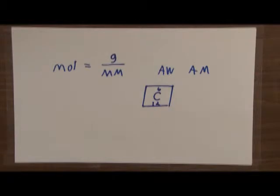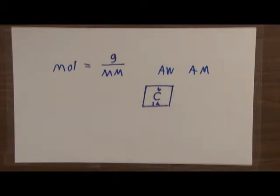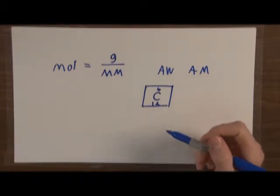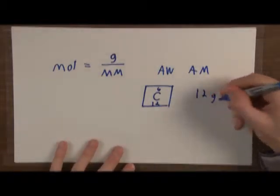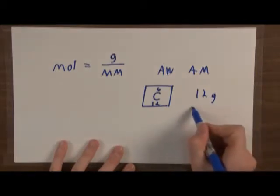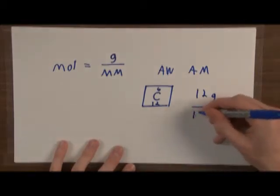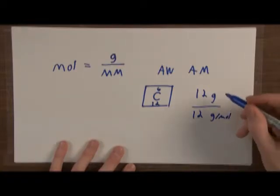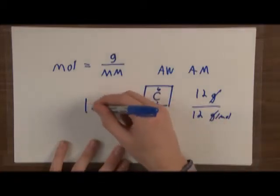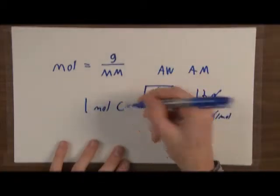If you're wondering where Avogadro's number comes from: Avogadro's number is the number of molecules in 12 grams of carbon. If we have 12 grams of carbon and the molar mass of carbon is 12 grams per mole, canceling out units gives us 12 over 12, which is equal to 1 mole of carbon.